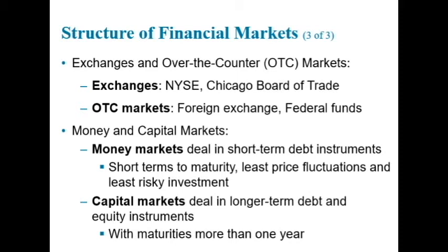Another way of distinguishing between markets is on the basis of the maturity of the securities traded in each market. The money market is a financial market in which only short-term debt instruments, generally those with original maturity of less than one year, are traded. The capital market is the market in which longer-term debt, generally those with original maturity of one year or greater, and equity instruments are traded. Money market securities are usually more widely traded than longer-term securities, and so tend to be more liquid. In addition, as we will see in Chapter 4, short-term securities have smaller fluctuations in prices than long-term securities, making them safer investments.